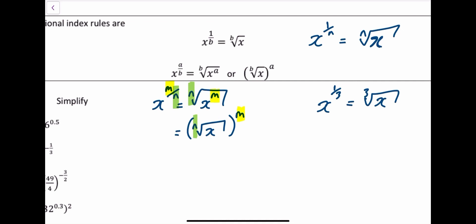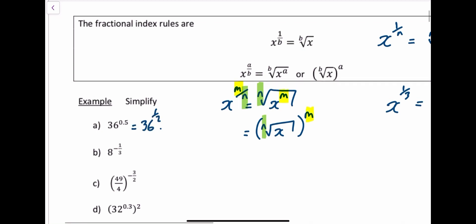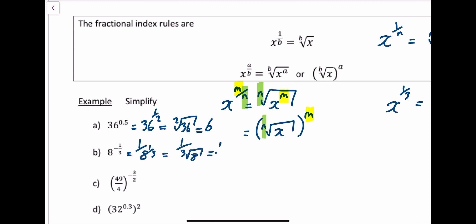Let's look at this in practice. 36 to the power of 0.5 — that's 36 to the power of a half, which means the second root of 36. The second root, which we know as the square root, gives us 6. Next, 8 to the power of minus 1/3: sort out the negative bit first — that's 1 over 8 to the power of 1/3, which is 1 over the cube root of 8, which is 1 over 2.